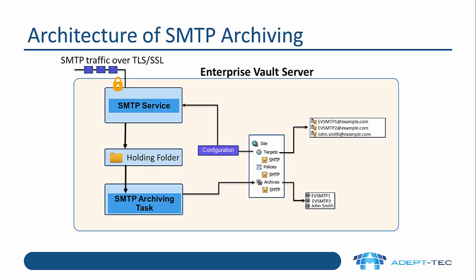Let's have a look at the architecture. When we install the Enterprise Vault SMTP archiving components, one of the things we add is the SMTP service. The SMTP service is listening for traffic on TCP port 25. When those emails are received they get processed and then sent to a holding folder — a folder somewhere on the Enterprise Vault server that needs to have plenty of disk space and fast disk.